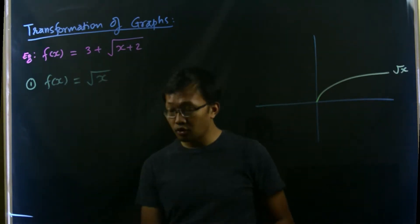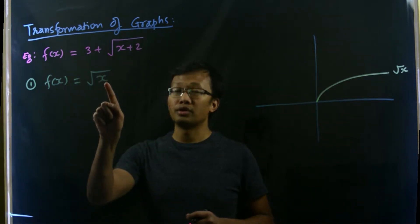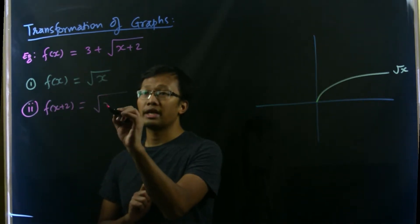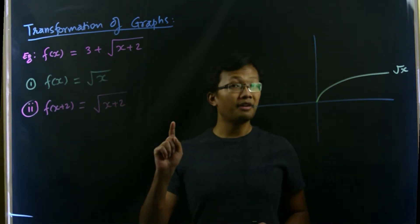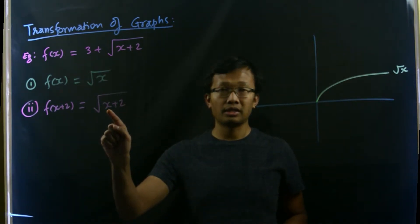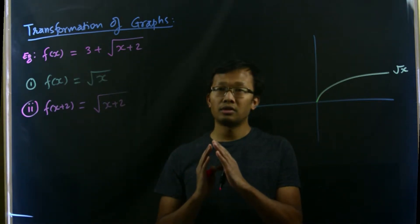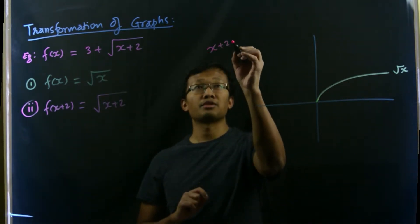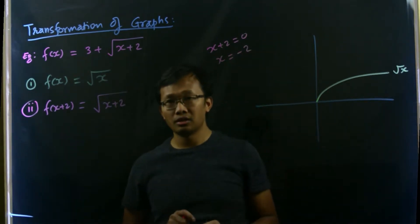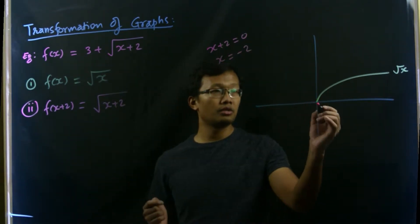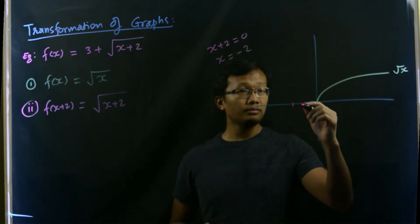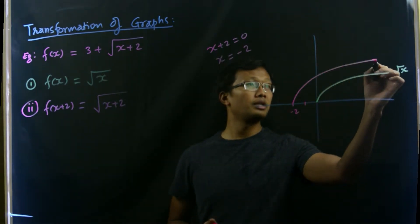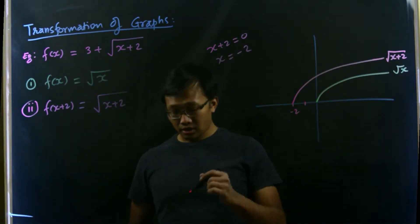Second, we add 2 to x, so f(x+2) would be root of x plus 2. If we add a number to x, we need to shift the graph either left or right — that means horizontal shifting. Since this is x plus 2, we set x plus 2 equals 0, so the shifting is towards the left by 2 units. This graph would shift accordingly — that's the horizontal shift.